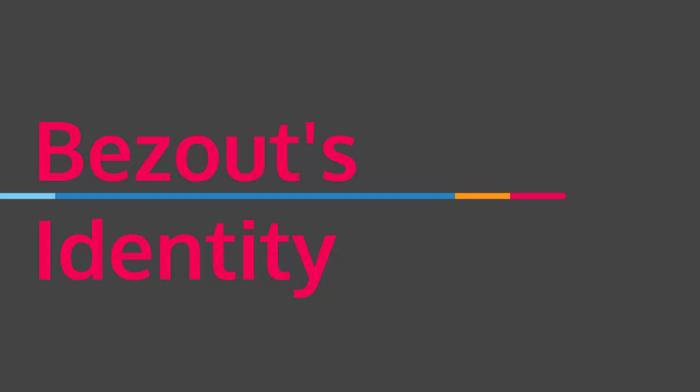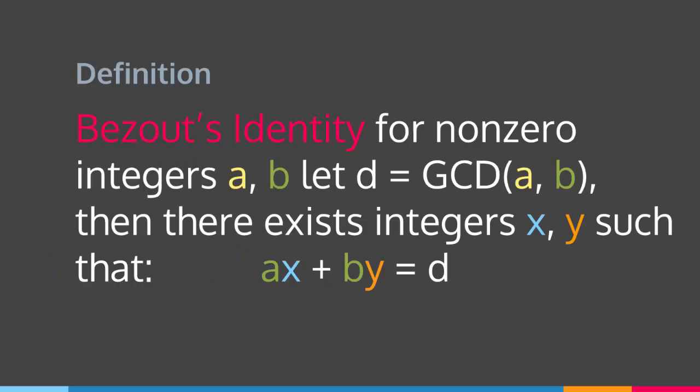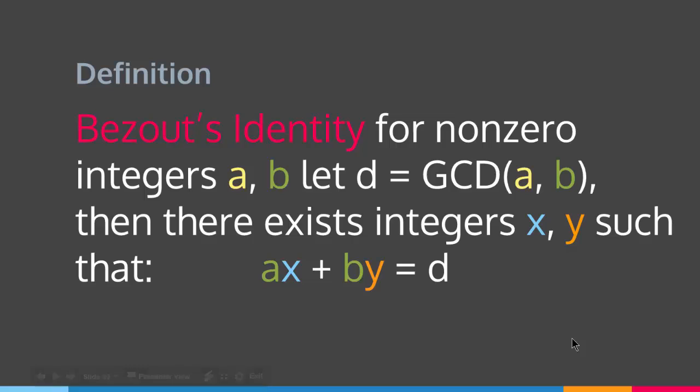Hello everyone and welcome to a new lecture. In this video we are going to talk about Bézout's identity. Basically, for a non-zero integer a and b, let d equal the gcd or the greatest common divisor of a and b. Then there exist integers x and y such that a times x plus b times y equals d. That is Bézout's identity.